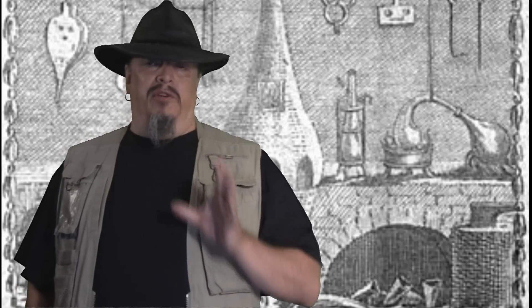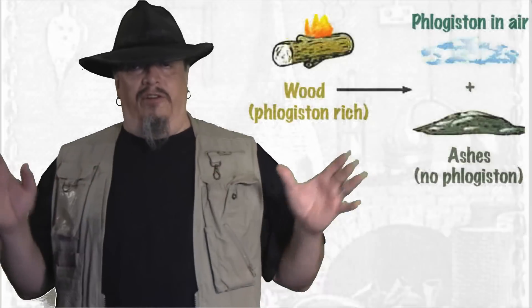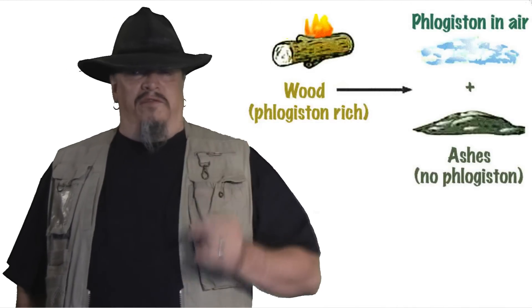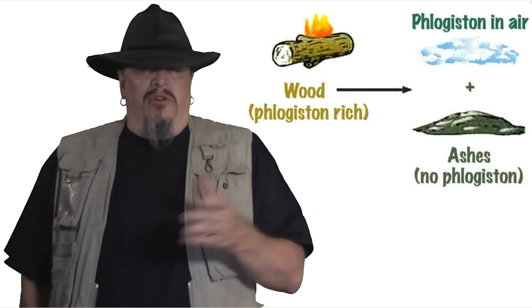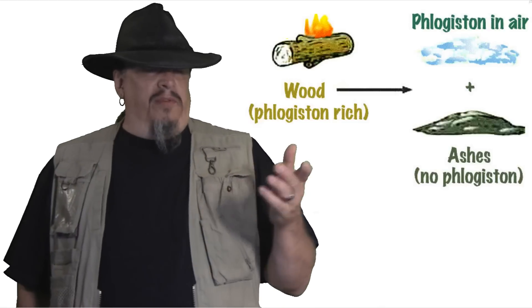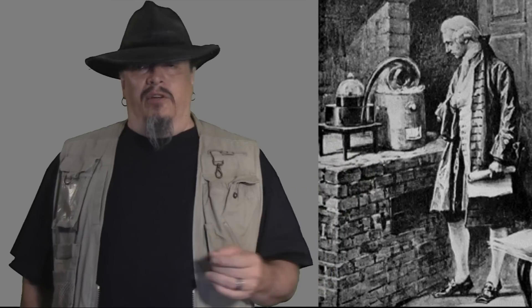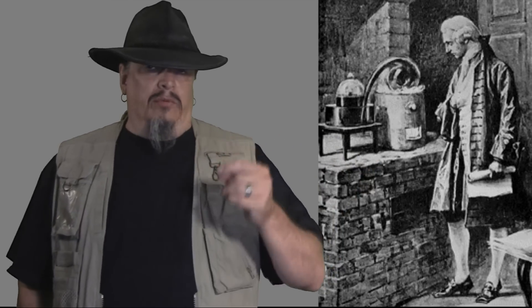Before anyone understood chemistry or chemical reactions, people had very strange ideas about how such things worked. Centuries ago, some pioneer scientists thought that the reason things burned was that they were partly made of an invisible mystery material called phlogiston. They thought that when something burned, this element of fire came out of it, leaving only ashes. There was no evidence to support this — it's just something that someone made up. But once they had that idea in their heads, some of these scientists refused to let it go, even when all their experiments failed. Finally, someone showed what combustion really is and proved there's no such thing as phlogiston.